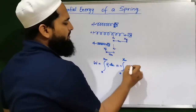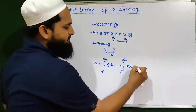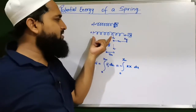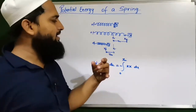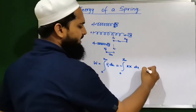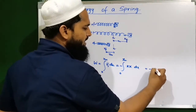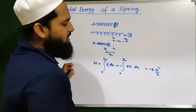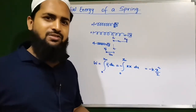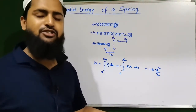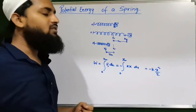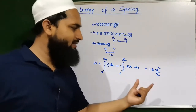Integrating F = -kx with respect to dx from zero to X_M — taking the constant k outside the integral — gives k times x squared over 2, which is half kx². This is the potential energy stored in the spring.